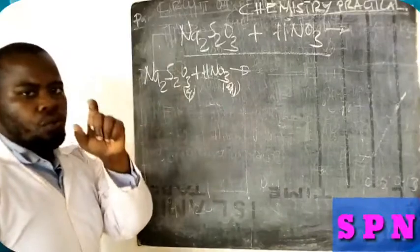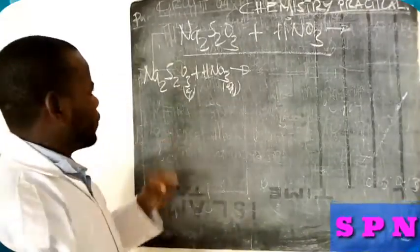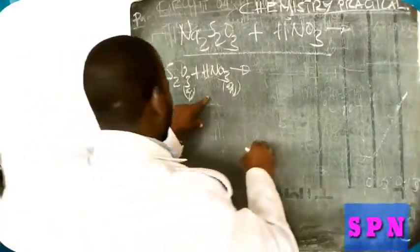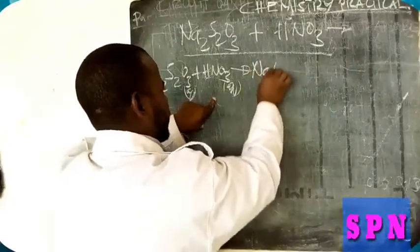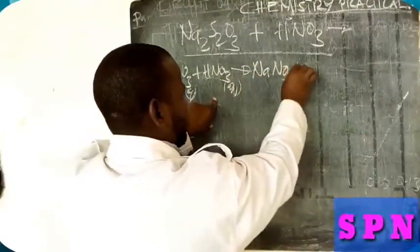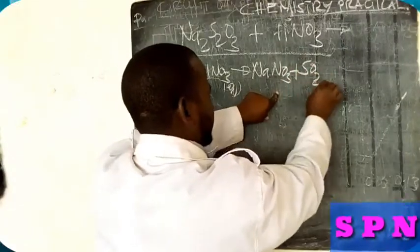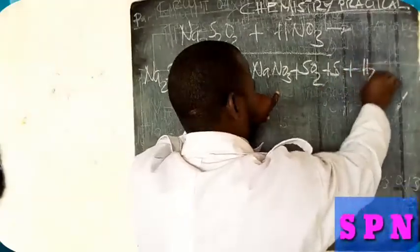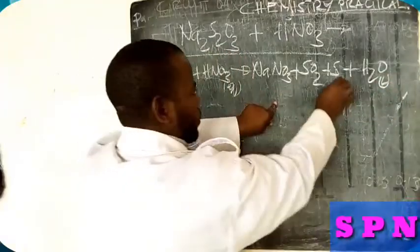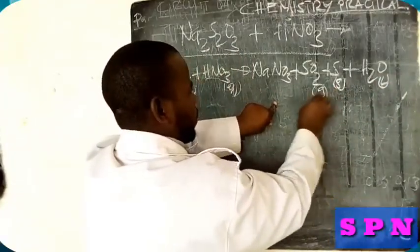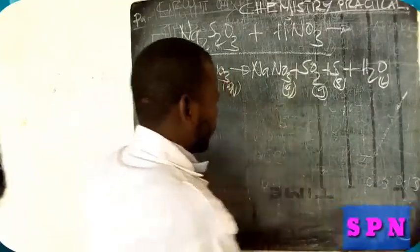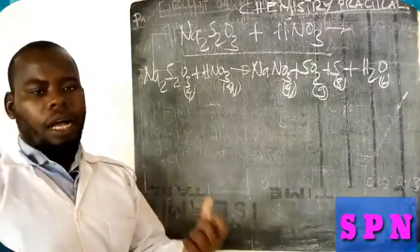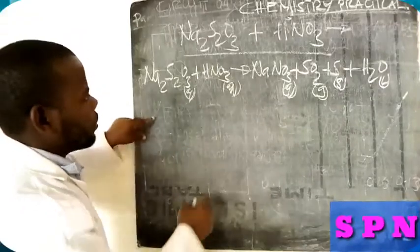It reacts in two ways. The first is it's going to produce sodium nitrate, NaNO3, plus sulfur dioxide, SO2, plus sulfur precipitate, S, plus water, H2O. This is a liquid, this is a solid precipitate, this is a gas, and this is our aqueous solution. This is the reaction equation, which means the ionic equation when you balance it.